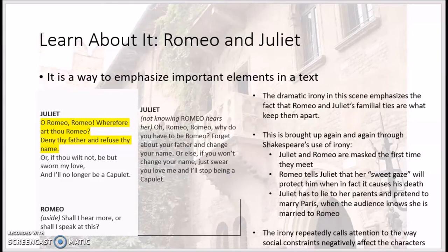And then finally, later in the story, Juliet has to lie to her parents and pretend to marry Paris, when we know that she's actually already married to Romeo. So these are three different examples of irony that repeatedly call attention to the way that social constraints negatively affect Romeo and Juliet.